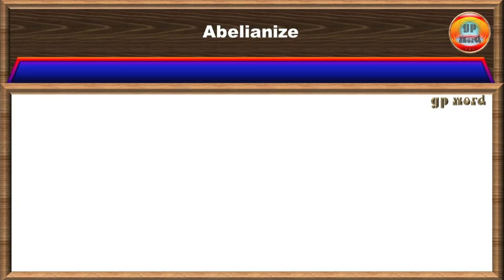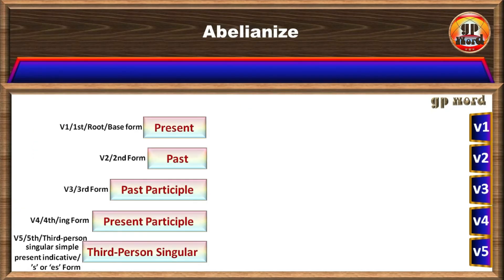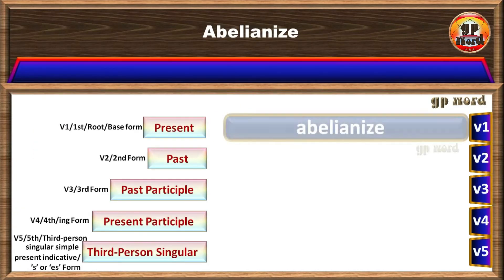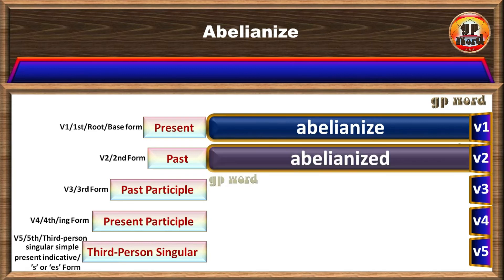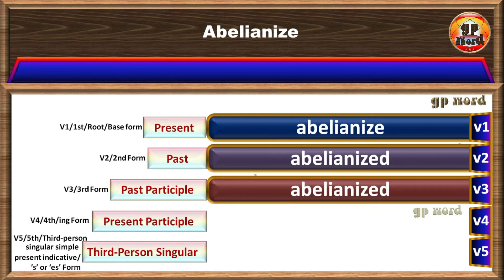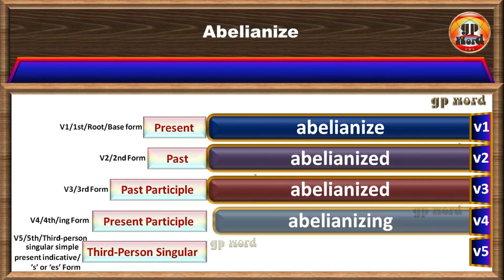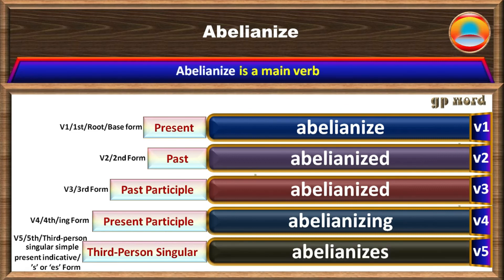Let's know all five forms of abelionize: Abelionize, Abelionized, Abelionized, Abelionizing, Abelionizes. Thank you guys for watching this video from GP word.